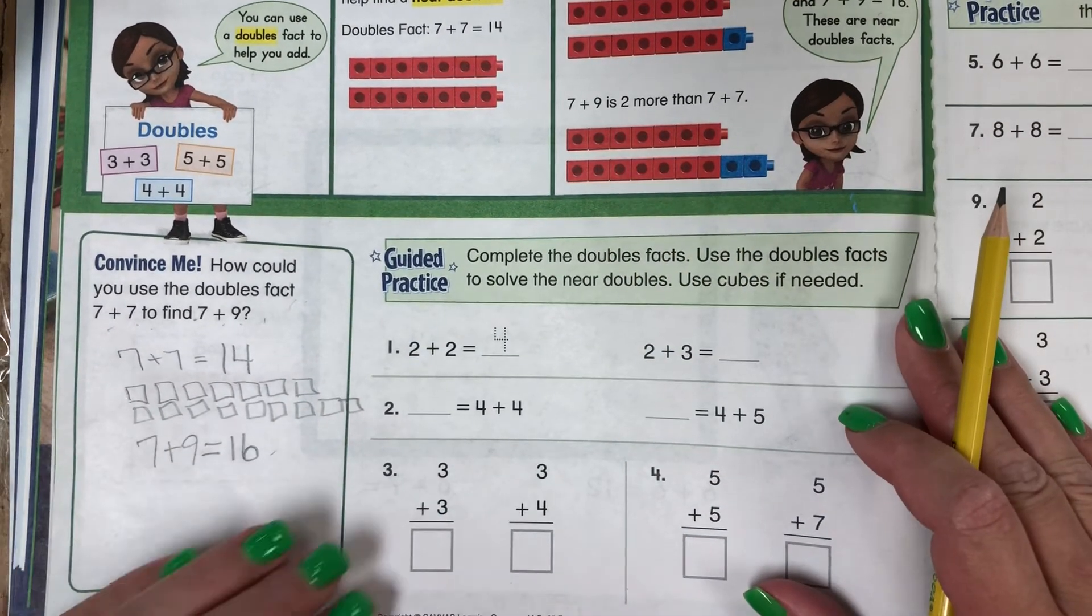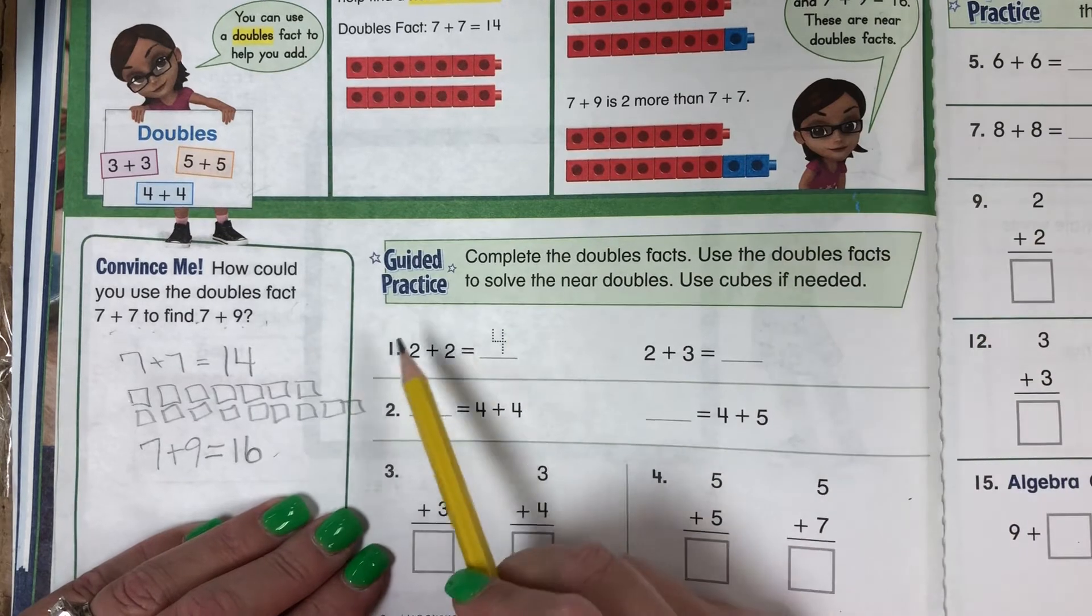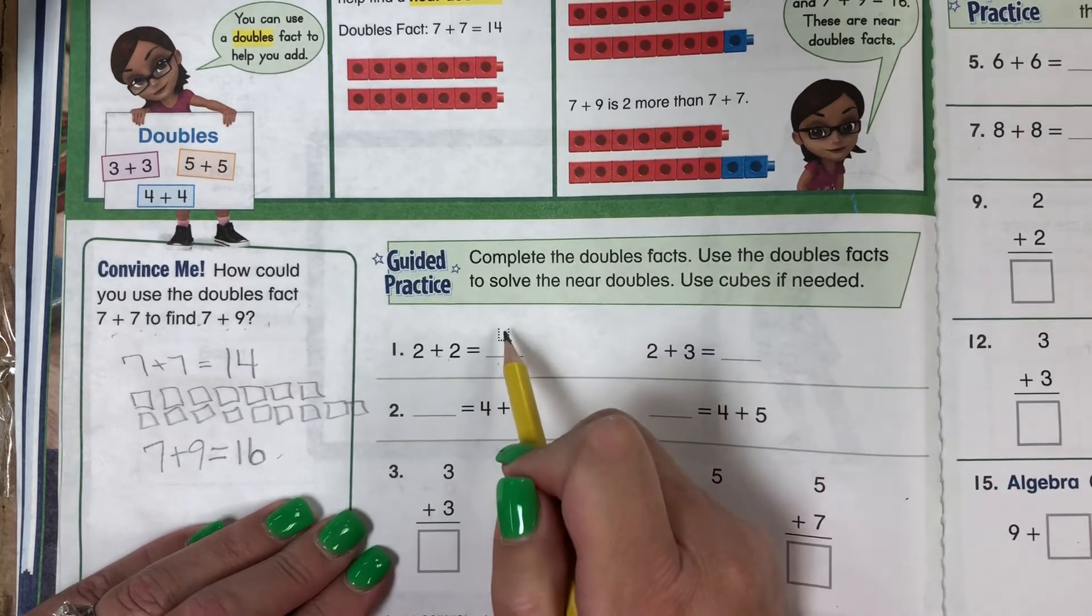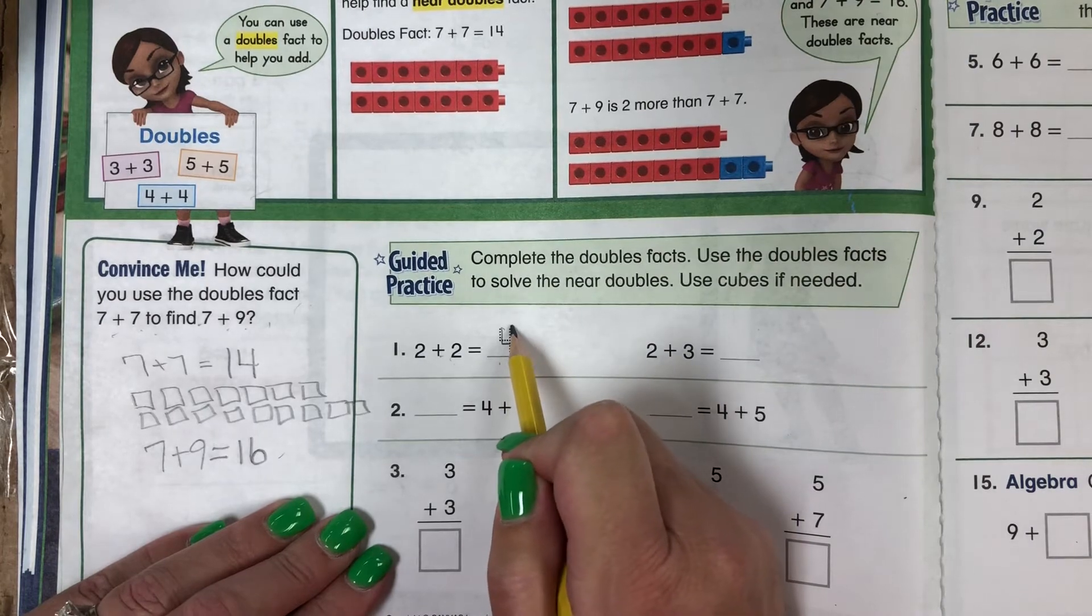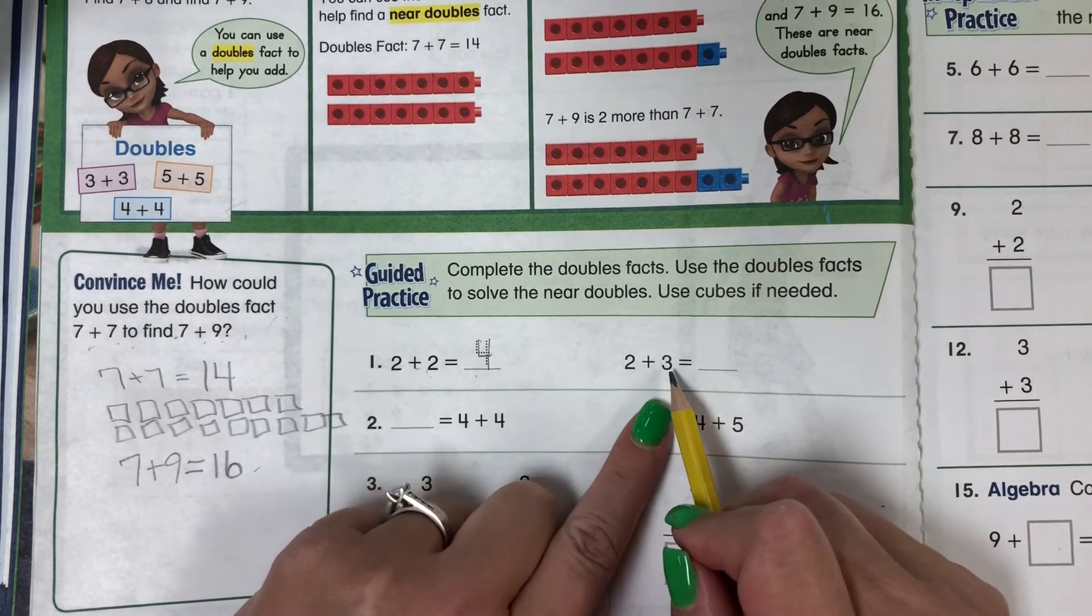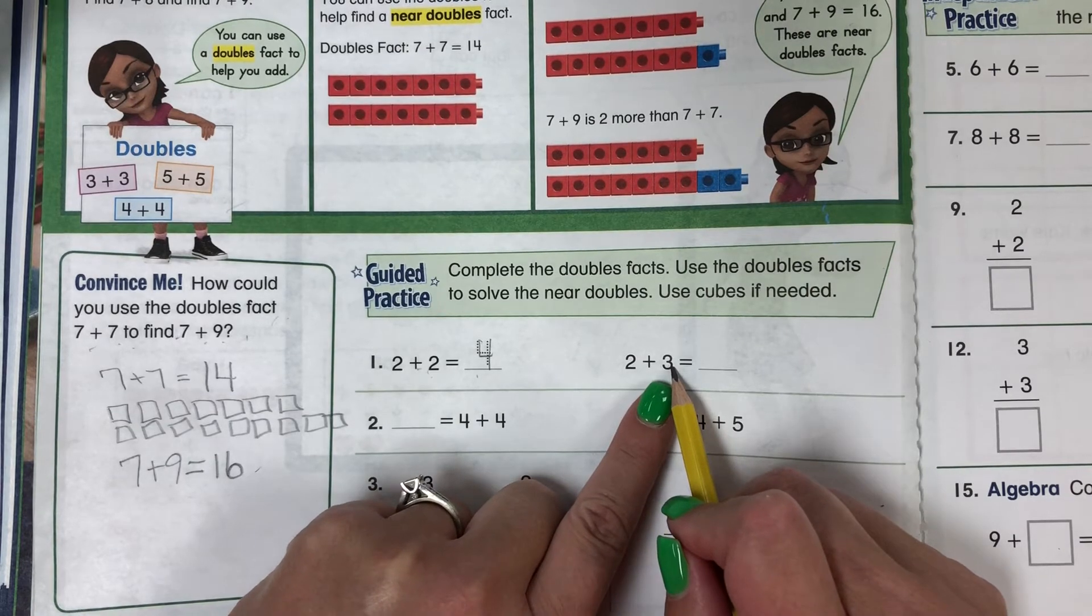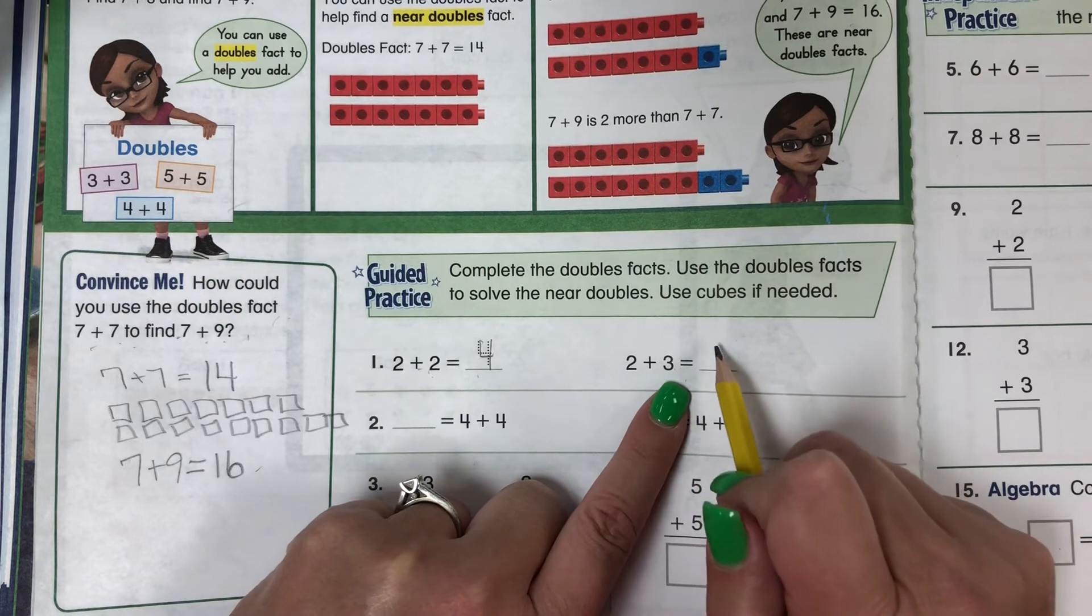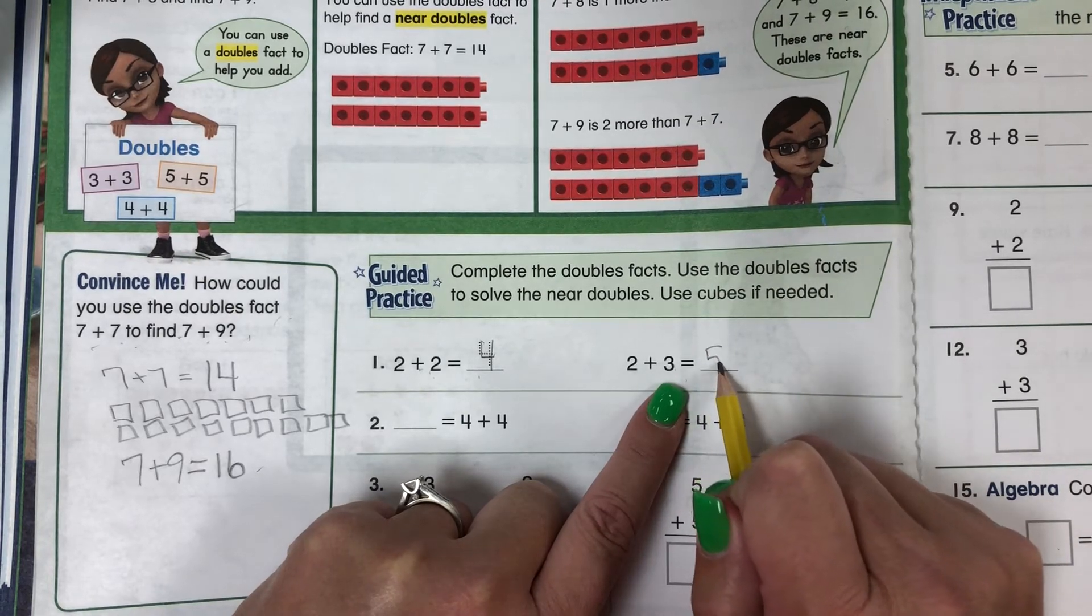Let's look at our guided practice. 2 plus 2 is 4, so I'm tracing my 4. 2 plus 3 is 4 plus 1 more, which is 5. Very nice job.